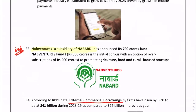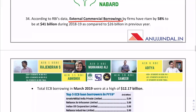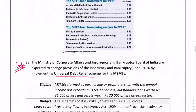Nabventures has launched a new fund specific to agriculture, food, and rural-focus startups. Nabventures is the subsidiary of NABARD. External commercial borrowings stand at $41 billion during 2018–19.